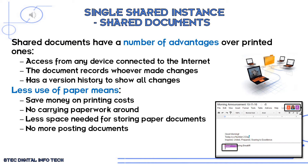One key term you need to know is single shared instance. This is a term used when talking about shared documents. When we are sharing a document between multiple people, it can be called a single shared instance because there's only one file, and multiple people work on that single shared instance. Shared documents have a number of advantages over printed ones: you can access them from any device, the document shows whoever has made any changes, and we also get a version history which shows all of the different changes that have been made at different stages and dates.